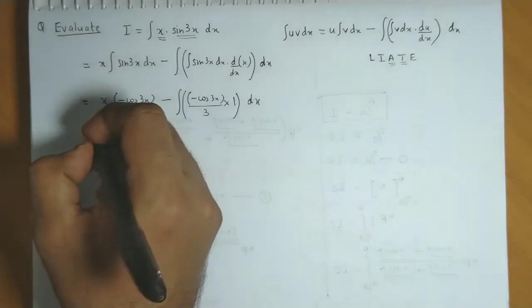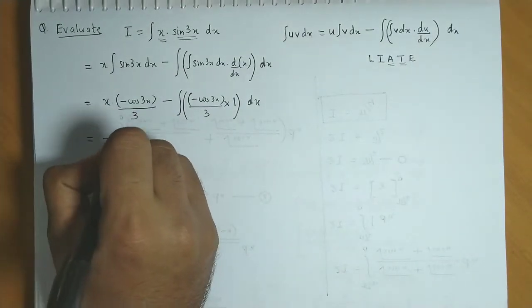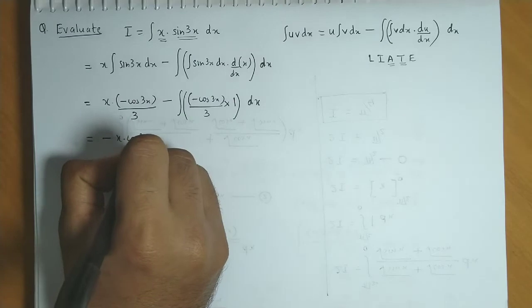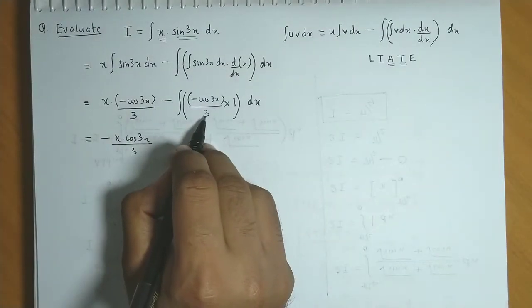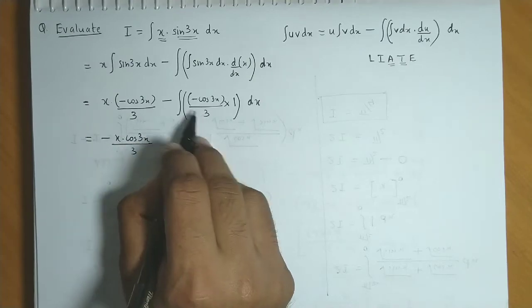So the next step would be minus x times cos 3x upon 3. We take the 3 outside from the denominator,